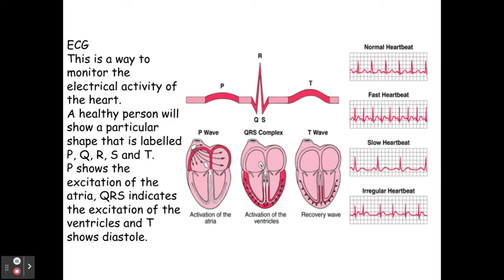In an exam, they might give you a normal heart rate and ask you to compare it to either a fast, slow, or irregular heart rate. You need to know the scientific terms: a fast heart rate is called tachycardia, a slow heart rate is called bradycardia, and an irregular heartbeat can be known as fibrillation — either atrial fibrillation or ventricular fibrillation.